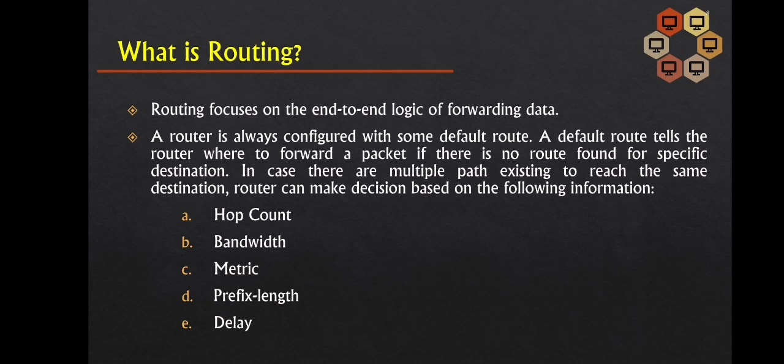A router is always set up with a default route. A default route instructs the router on where to forward a packet if no route to a specific destination is found. If multiple paths to the same destination exist, the router can make a decision based on hop count, bandwidth, metric, prefix length, and delay.